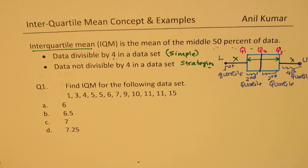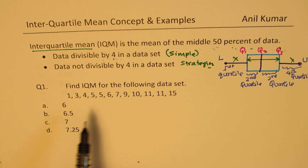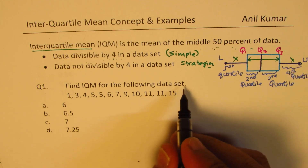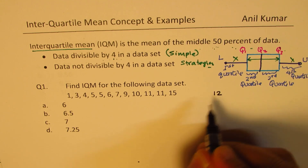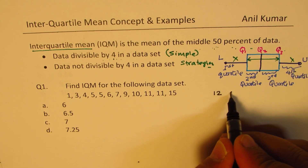I'm not using any formula here but simple concepts, and as we go through examples you'll clearly understand how to calculate interquartile mean. Example 1: find the interquartile mean for the data set 1, 2, 3, 4, 5, 6, 7, 8, 9, 10, 11, 12. In this data set we have twelve observations.